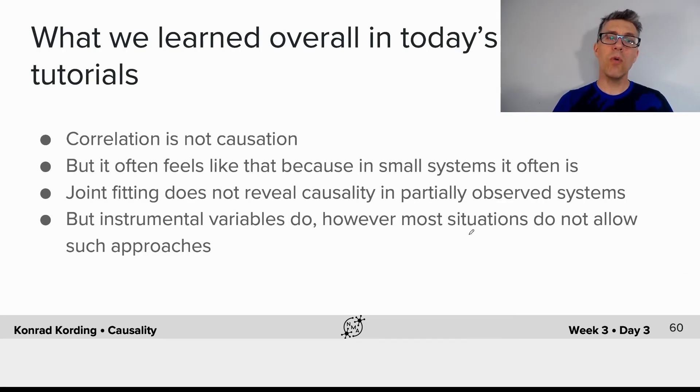Now let's zoom all the way out. What have we learned overall in today's tutorials? We found that correlation is not causation, and we dwelt on the definition of causality because it's so important. We learned why it often feels like correlation is causation, because in small systems it actually often is. And we found that joint fitting does not reveal causality in partially observed systems.